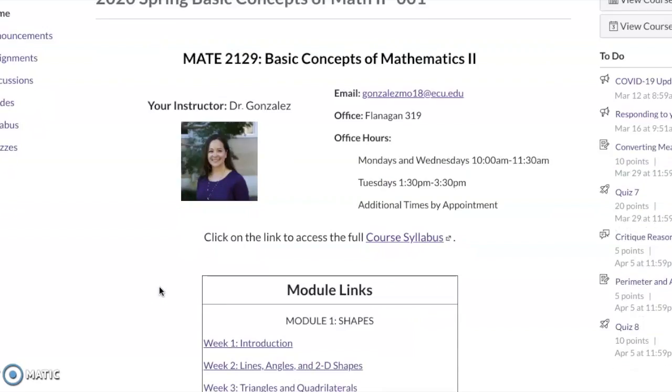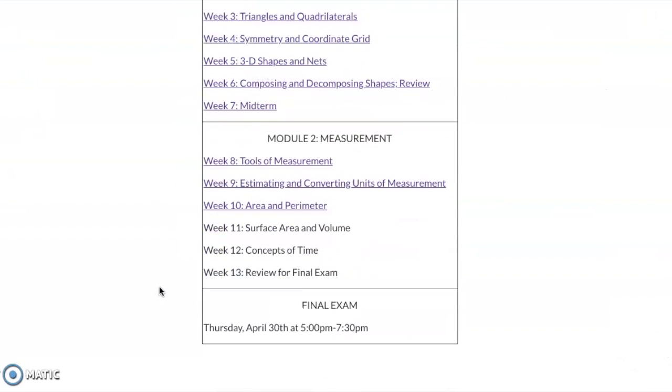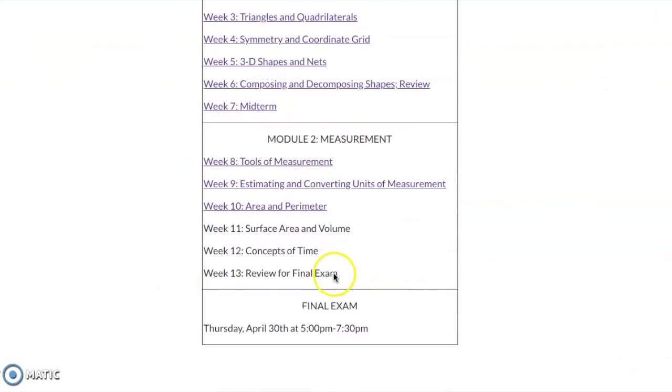When you go into our Canvas page, you're going to notice that there are a few changes to the measurement module. First of all, we've lost a week of instruction and I combined two of the weeks together so that way we can still have the same content but in an abbreviated way. If you notice we will not have a binder check anymore, so our normal schedule of what we did is going to change quite a bit. So I'm going to give you an introduction of what that looks like.